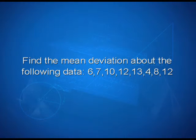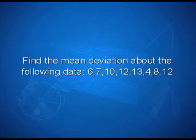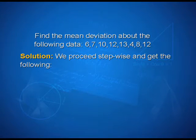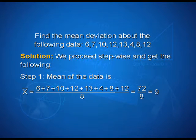Find the mean deviation about the mean for the following data: 6, 7, 10, 12, 13, 4, 8, 12. For the solution, we proceed stepwise. Step 1: mean of the data is x̄ = (6 + 7 + 10 + 12 + 13 + 4 + 8 + 12) / 8 = 72 / 8 = 9.